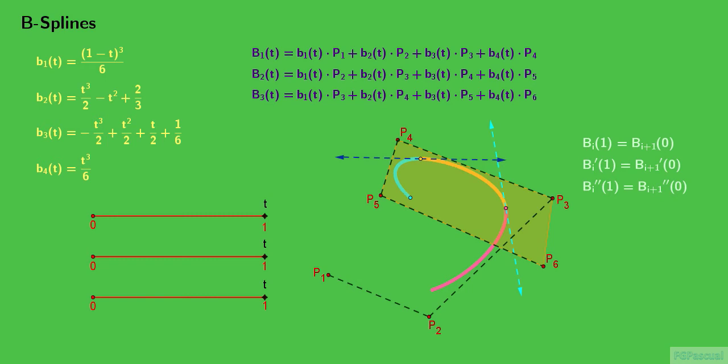There is one more condition that we have hardly touched upon, and that involves the convex hull. Each segment should lie within the convex hull of the points used to determine the segment. We will discuss what this statement means geometrically.